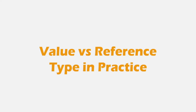In the last lecture, we learned about what is value type and what is reference type in JavaScript. Now in this lecture, let's try to understand value type and reference type with some examples. We are going to look at some examples where without the knowledge of value and reference type, it will be difficult for you to understand the result of that code.